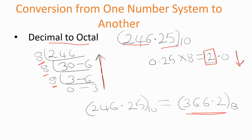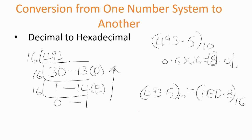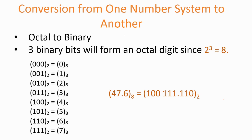For decimal to hexadecimal conversion, divide the integer part continuously by 16 and take the remainders from bottom to top. For the fractional part, multiply by 16 and take the integer results from top to bottom. For example, for 493.5: the fractional part 0.5 × 16 = 8 with remainder 0, so we stop. The hexadecimal equivalent of 493.5 is 1ED.8.